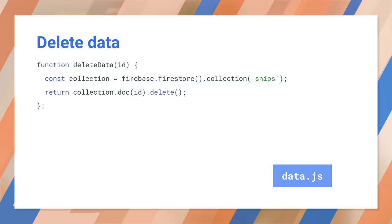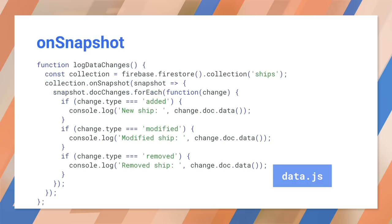To delete a doc, we can call the delete method on a specific doc. You can call onSnapshot on a query to add a listener to Firestore. This creates a document snapshot immediately with the current contents of the query, and then each time the contents change, another call updates the document snapshot. We can see what kind of change was made using the doc changes method and checking the change dot type — this can be added, modified, or removed.